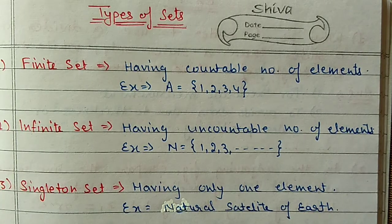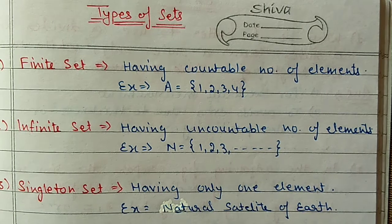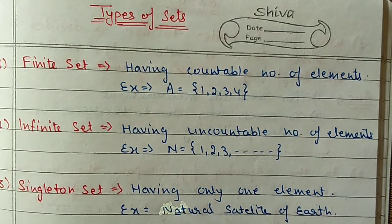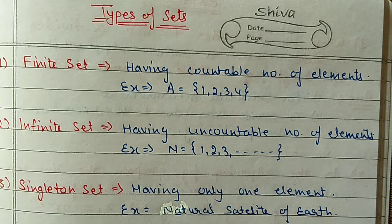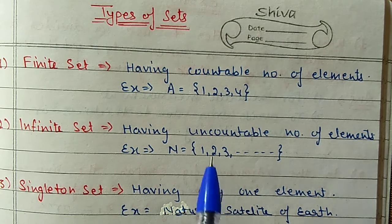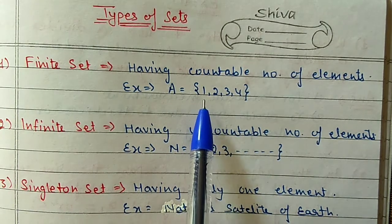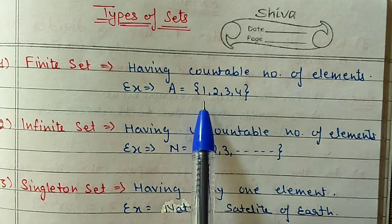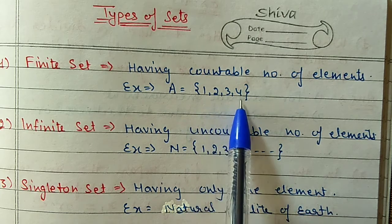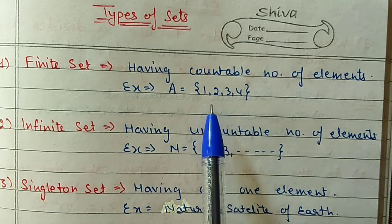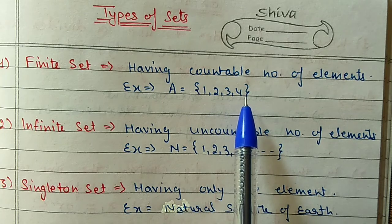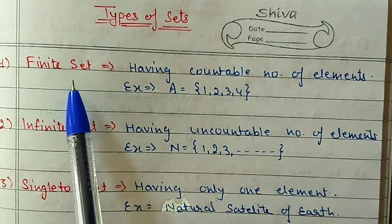In Exercise 5.2 you will learn about types of sets. The first type is a finite set. A finite set means if a set has a countable number of elements, we call it a finite set. For example, the set A = {1, 2, 3, 4}. I can easily count how many elements are there - 4 elements. So if you are able to count the number of elements, we call it a finite set.